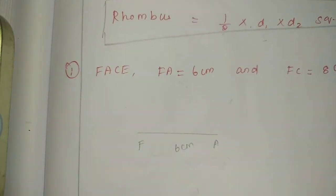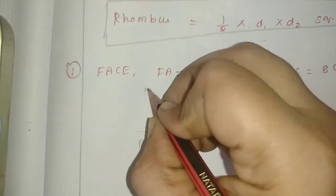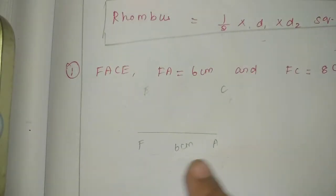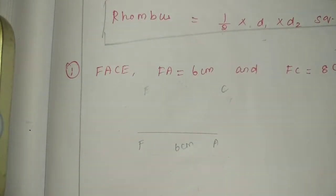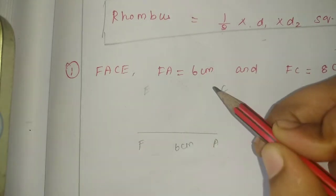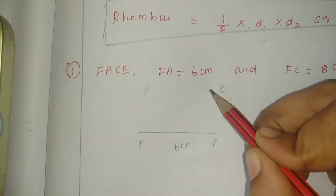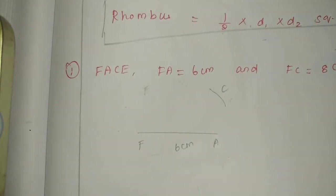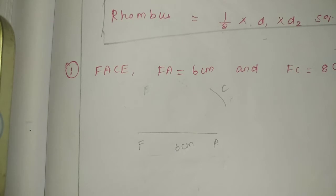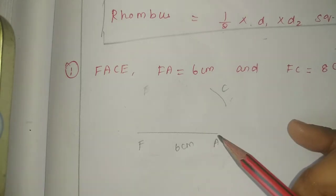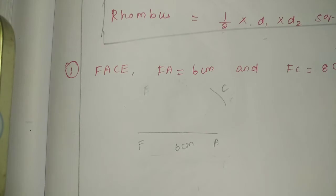Let us first draw the rough diagram and then the fair diagram. The rhombus FACE — all outer sides are equal. So the base is 6 cm, and all the other sides are also 6 cm each.